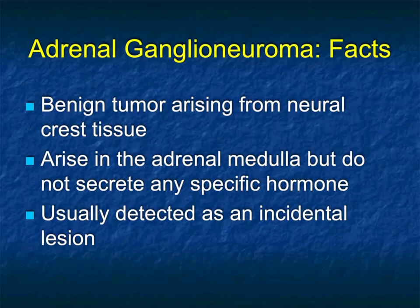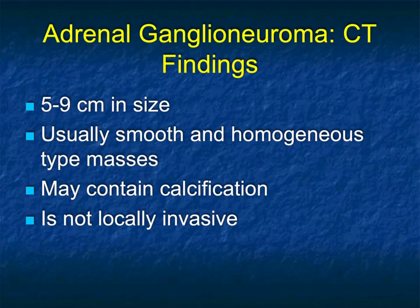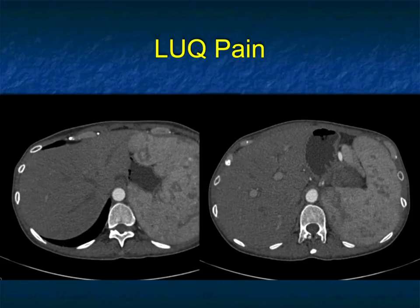Other unusual benign lesions include adrenal ganglioneuroma — a benign tumor arising from neural crest tissue, typically arising in the medulla, that does not secrete a specific hormone and is usually an incidental finding. Adrenal ganglioneuromas are in the five to nine centimeter range, though my experience was typically in the three centimeter range. They were typically low density, sometimes enhanced from arterial to venous to delayed, could contain calcifications, and were not invasive.